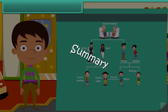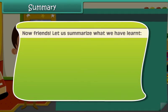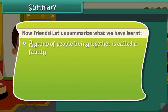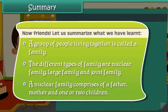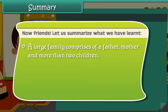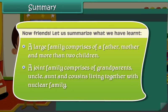Summary. Now friends, let us summarize what we have learned. A group of people living together is called a family. The different types of family are: nuclear family, large family and joint family. A nuclear family comprises of a father, mother and one or two children. A large family comprises of a father, mother and more than two children. A joint family comprises of grandparents, uncle, aunt and cousins living together with a nuclear family.